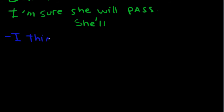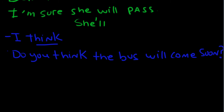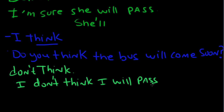We use 'think' with will. For example: Do you think the bus will come soon? I hope so. Or: Do you think Sarah will pass her exams? We also use it with 'don't think': I don't think I will pass my exams, because I didn't study. So in this instance we're making a prediction — a negative prediction.